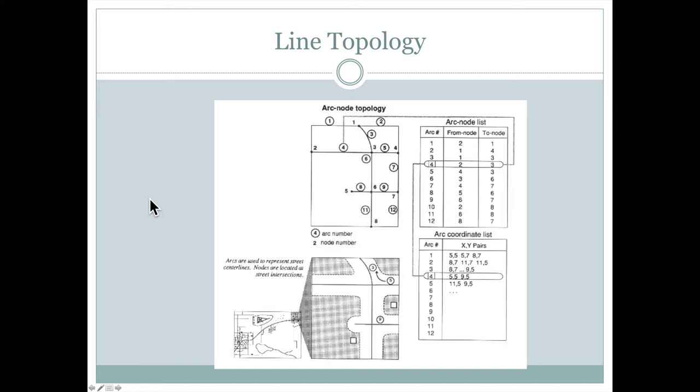For example, if we look at this line number four, which goes from here to here, it knows that it started at point two and was drawn to point three. So it's from node, here's arc number four, its from node is point two and its to node is point three.